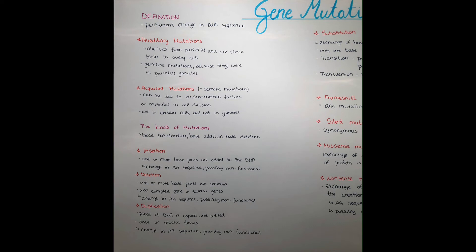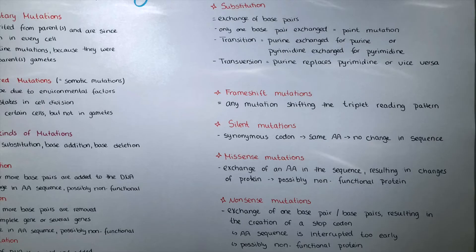The next kind of mutation is the substitution. This is one of the three main kinds, where there occurs an exchange of base pairs. If only one base pair is exchanged, we call it a point mutation. The substitution might be either a transition or a transversion. In a transition, a purine base is exchanged for another purine base, or a pyrimidine base is exchanged for another pyrimidine base.